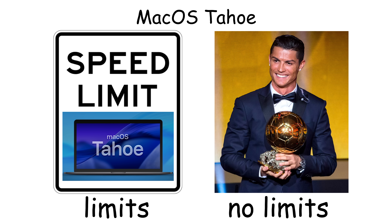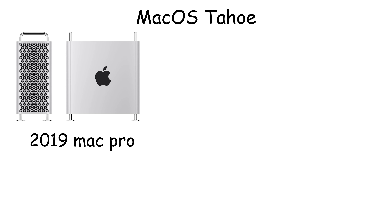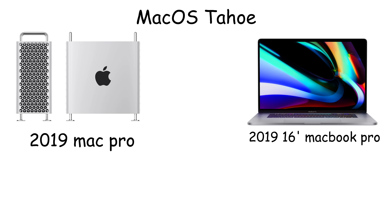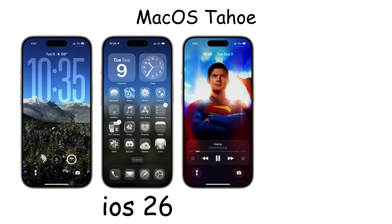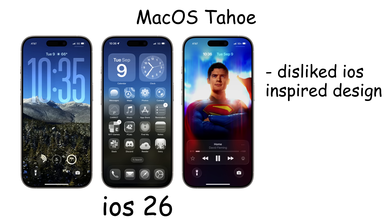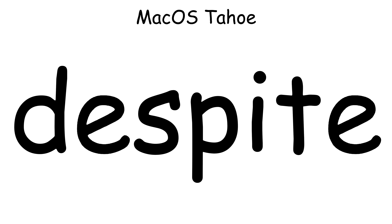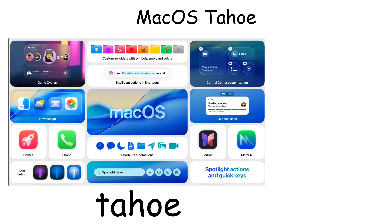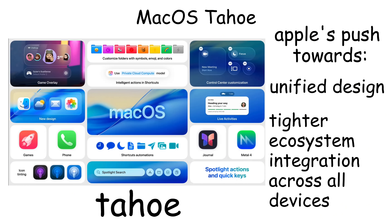However, Tahoe faced criticism and limitations. It marked the final version of macOS to support Intel-based Macs, with only the 2019 Mac Pro, 2019 16-inch MacBook Pro, 2020 13-inch MacBook Pro, and 2020 iMac models supported. Some users disliked the heavily iOS-inspired design, feeling it didn't fit the Mac's identity. The removal of Launchpad was controversial, and the translucent menu bar required a toggle option. But despite mixed reactions, Tahoe represented Apple's continued push toward unified design and tighter ecosystem integration across all devices.